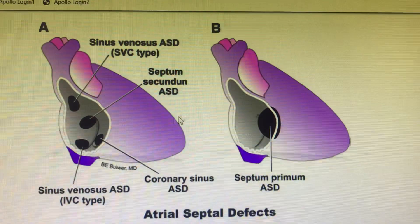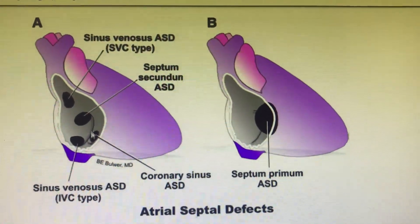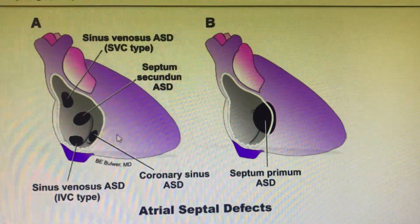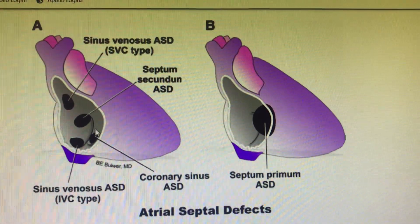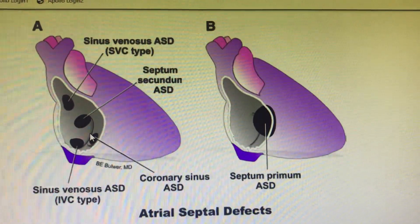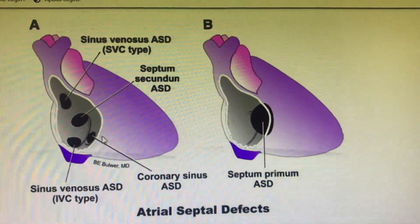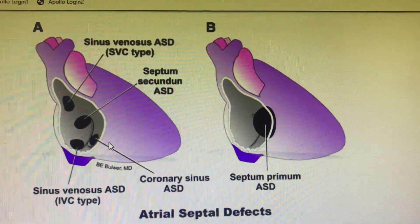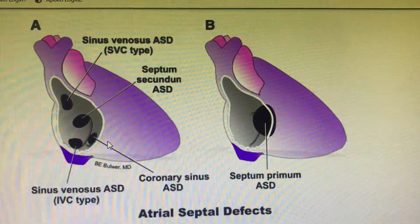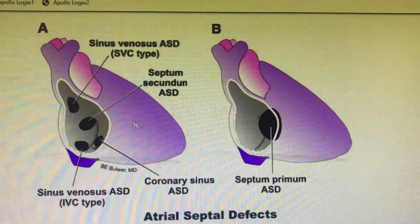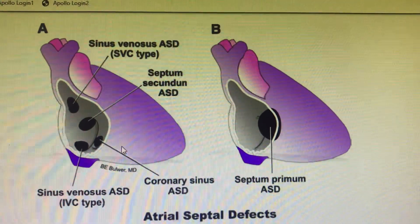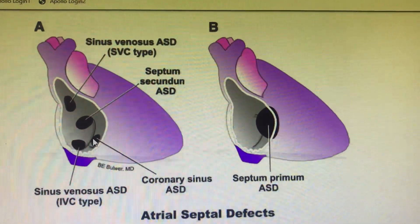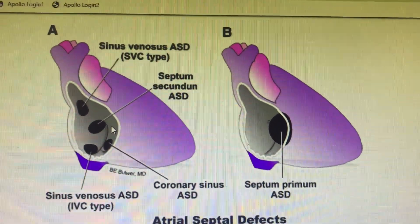The septum secundum ASD is more commonly associated with a septal aneurysm. The coronary sinus ASD occurs because the coronary sinus opens into the right atrium, but if unroofing of the coronary sinus occurs — where the roof of the coronary sinus doesn't form properly — this unroofing may cause left atrium and right atrium communication through the coronary sinus. It is more commonly observed with a left superior vena cava (left SVC). This can be confirmed by injecting contrast into the left antecubital vein, which will drain directly into the coronary sinus and into the left atrium if unroofing is present.